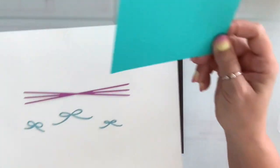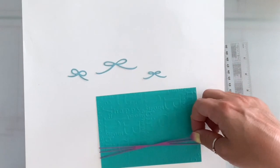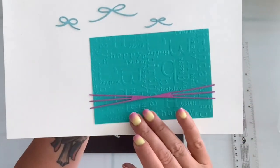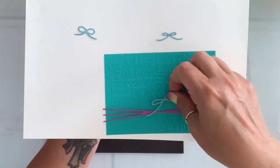And basically this you can use, let's say you have your card and you want to put string so it acts as the string. And then you can put your bow on it. It's so cute.